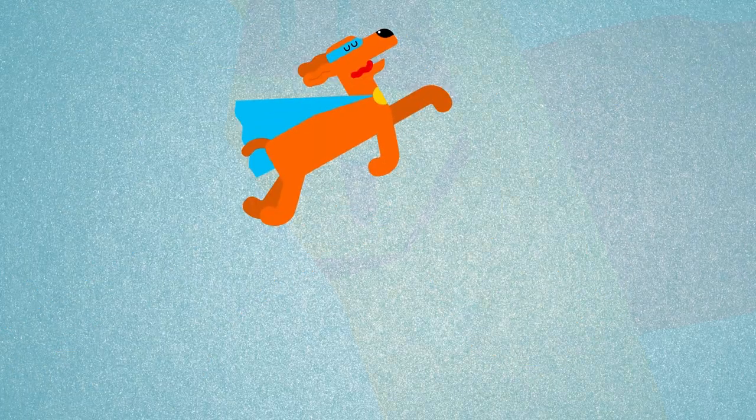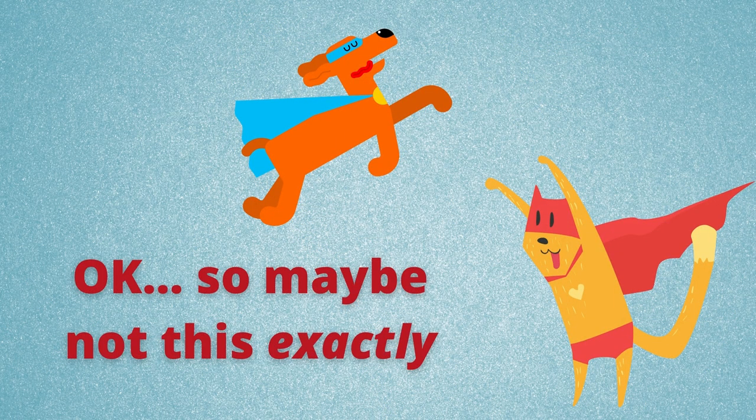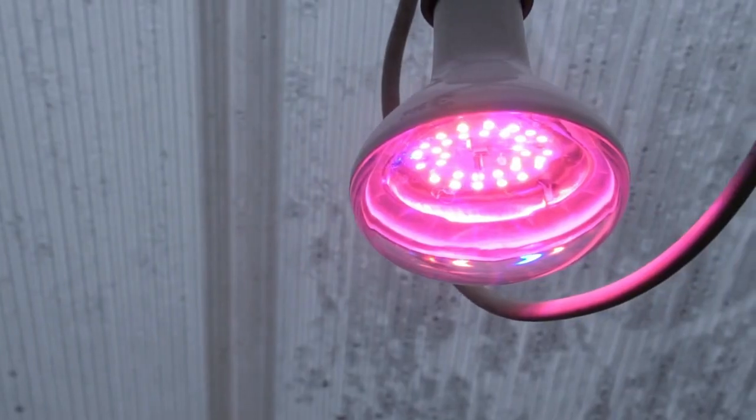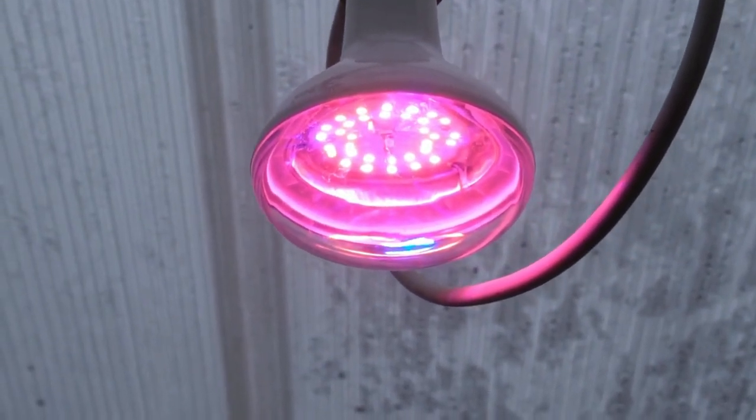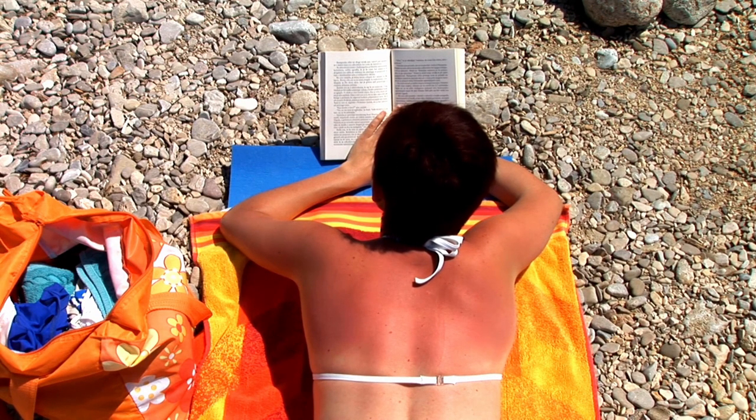you'd be able to see things that are invisible to the human eye. Some animals have that superpower — they can see ultraviolet, or UV, light. Yep, the same light that can cause a serious sunburn if you spend too long at the beach without sunscreen. How is this possible?